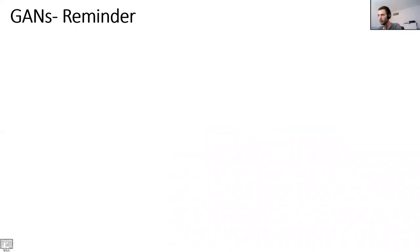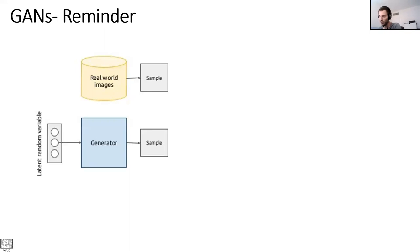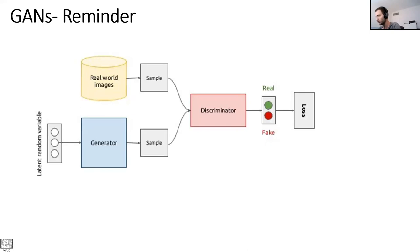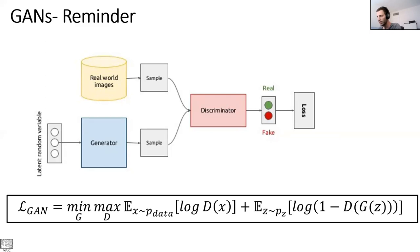A quick recap of GANs: we had real world images that we sample from. At the same time, we have a generator, a neural network that receives latent random variables — for example, the standard Gaussian distribution. The goal of the generator is to generate samples such that the discriminator, a second neural network, will be unable to distinguish between the real world images and images generated by the generator. This alternate training where the discriminator and generator each get better usually gives GANs their advantage of producing high quality images. It's a minimax game where the discriminator tries to uncover the generator and the generator tries to fool the discriminator.